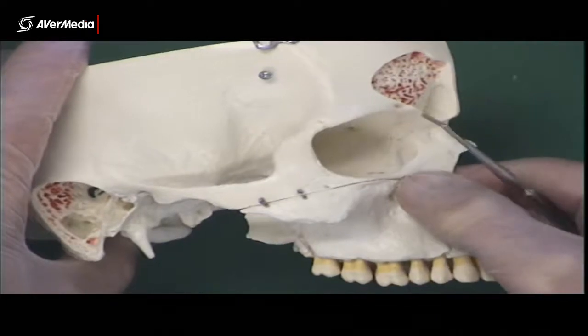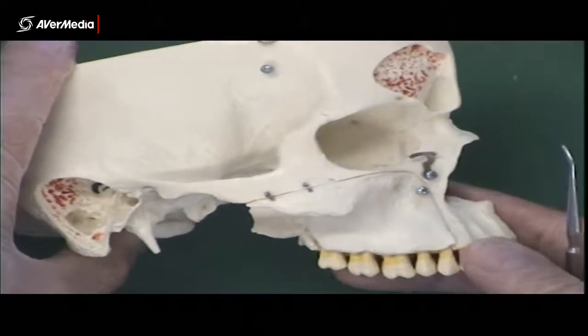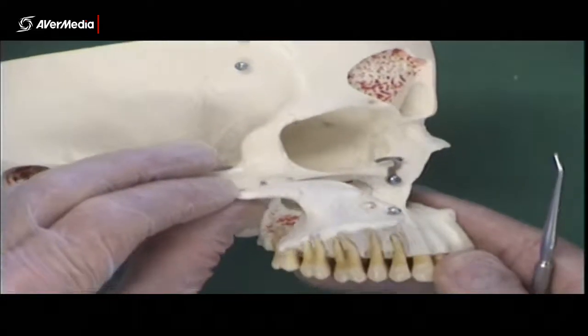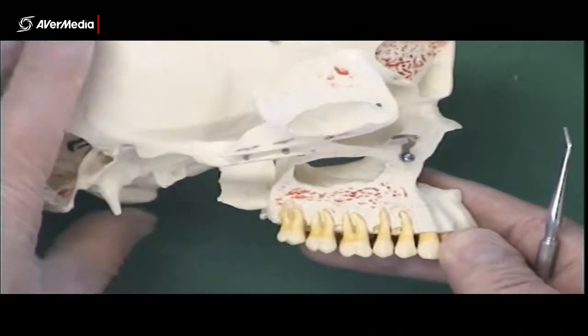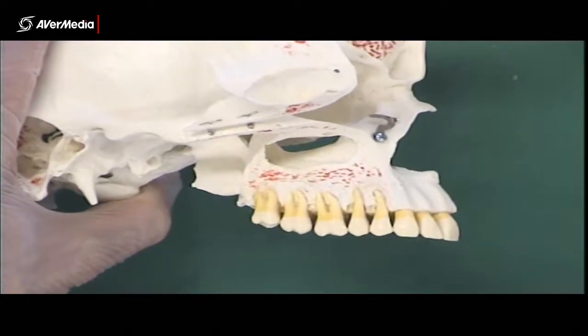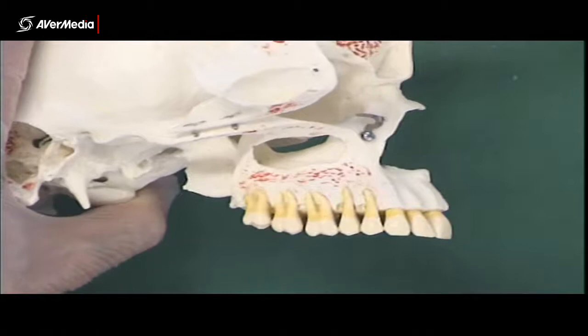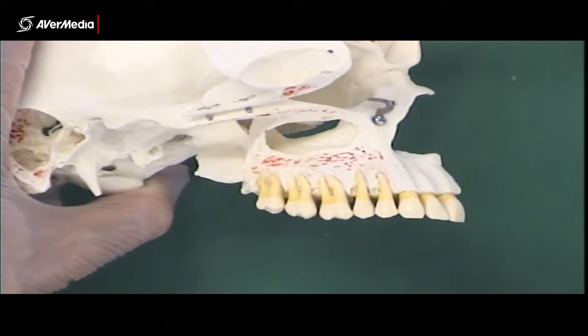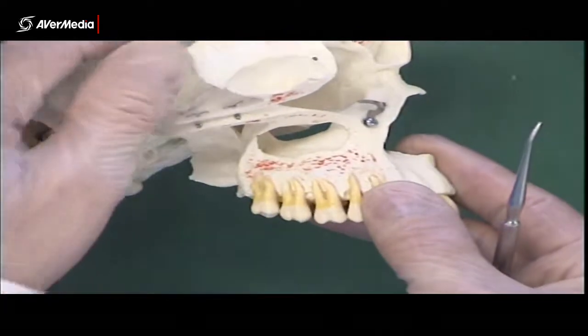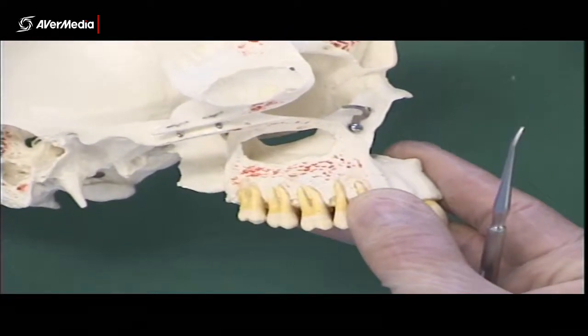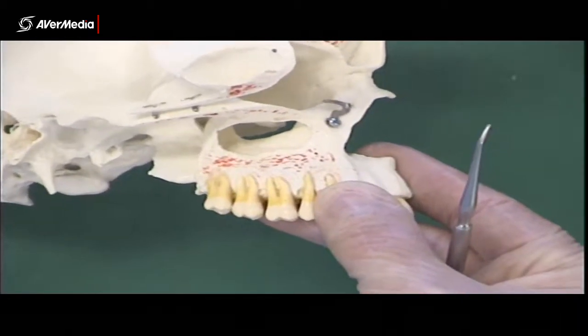So looking from an external point of view this time, if we open the maxilla up we can see that there's a big sinus in here. So that's the maxillary sinus, and there are a couple of other ways we can see it. There's another model we can see it on, but this is probably as good and as clear a view as you're going to get of the maxillary sinus.